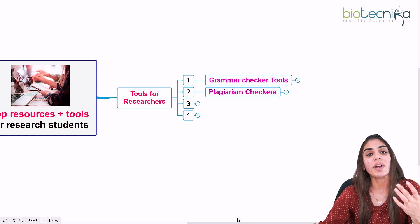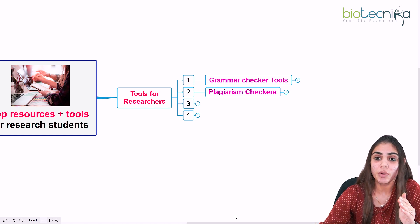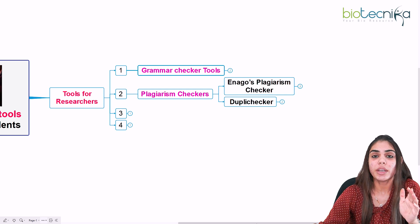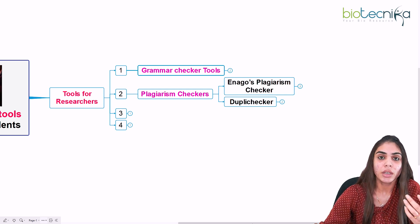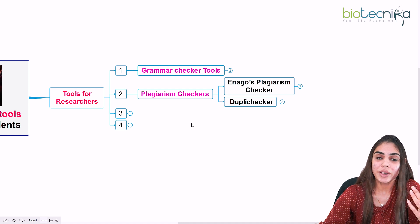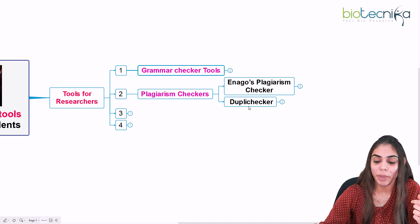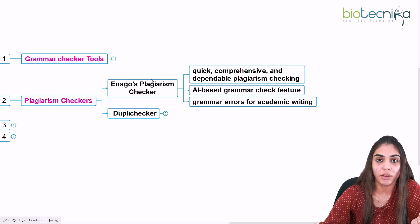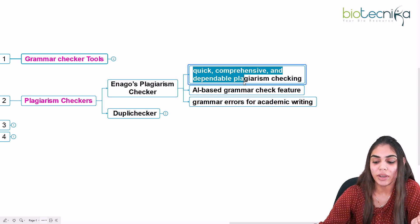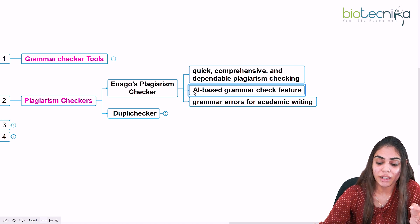If you are writing something — suppose you have written your manuscript for a publication — to avoid your manuscript getting rejected, you need to check it using a plagiarism tool. Upload your manuscript and it will ensure you have not copied or pasted any text from previously published papers. There are two tools: the first is Enago's Plagiarism Checker — a quick, comprehensive, and dependable plagiarism checker that is freely available.